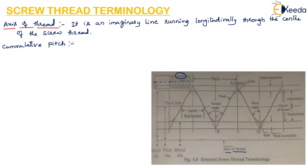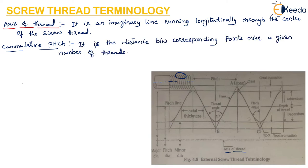Cumulative pitch is the distance between two corresponding points over a given number of threads. This cumulative pitch can be measured over a complete number of pitches or it may include a fraction of pitch, in which case the points over which it is measured will not lie in a plane.